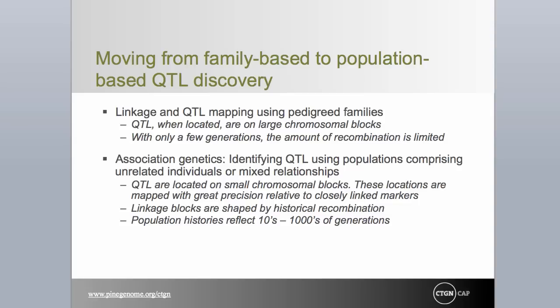The previous module introduced the concept of QTL mapping in controlled crosses, or pedigrees, and described its utility for characterizing the genetic basis of quantitatively inherited traits. In this module, we briefly introduce an alternative approach to complex trait dissection called association genetics, but spend most of the module discussing linkage disequilibrium, the foundation upon which association is built. Association genetics has also been called association mapping or linkage disequilibrium mapping. Most geneticists would prefer the term gametic phase disequilibrium. In the subsequent module, we provide a more thorough discussion of association mapping itself.